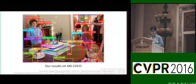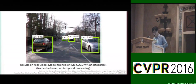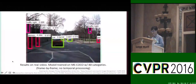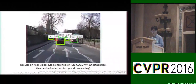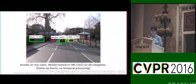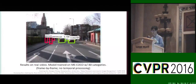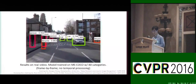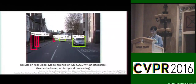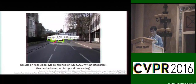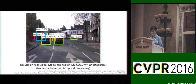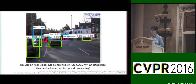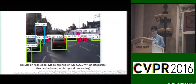Here is one of our results on the MS COCO dataset — our method can detect many objects in the image. Here is one example on a video: a generic object detector trained on MS COCO with 80 object categories, not limited to cars or persons. We show frame-by-frame detection with no temporal processing. The detector can detect cars, trucks, buses, persons, bicycles, traffic signs, and more.